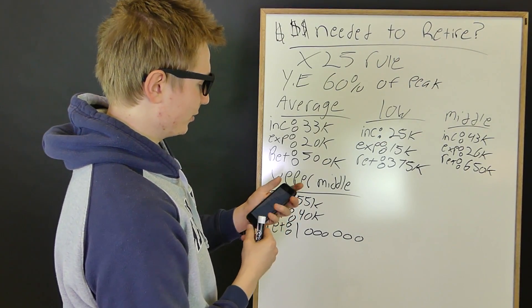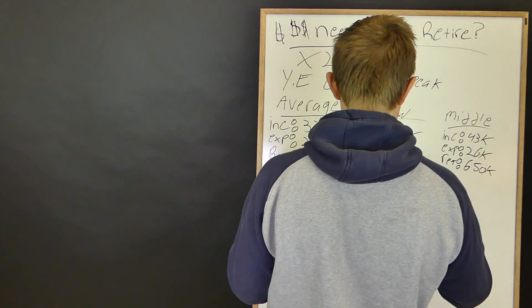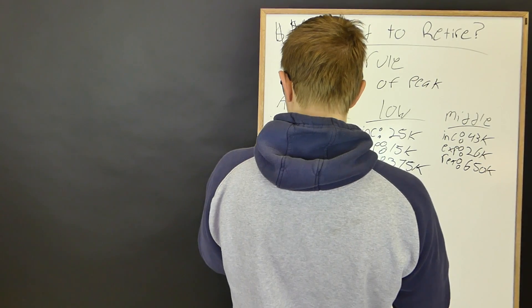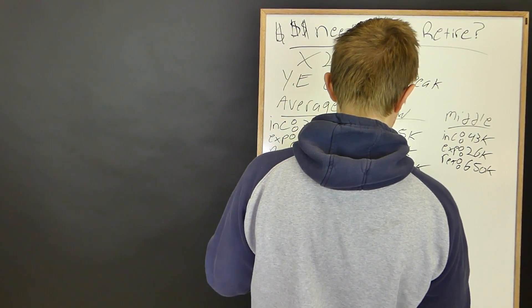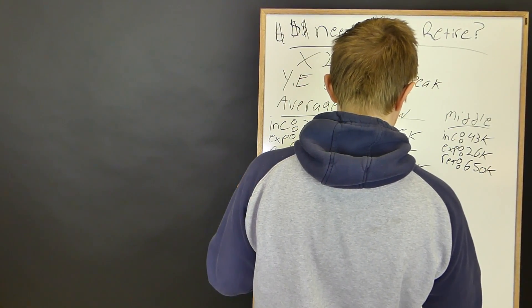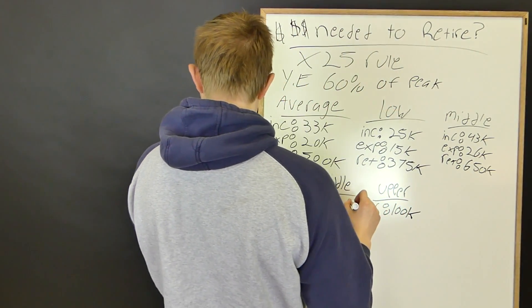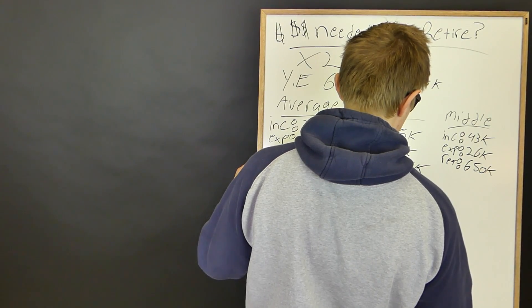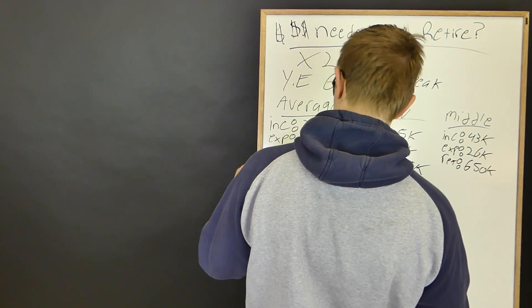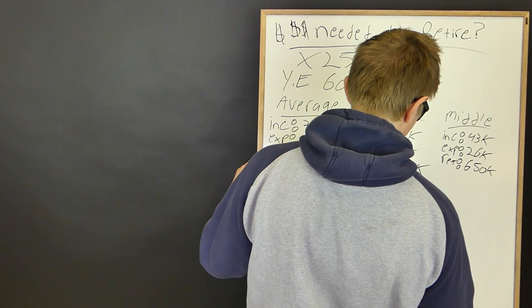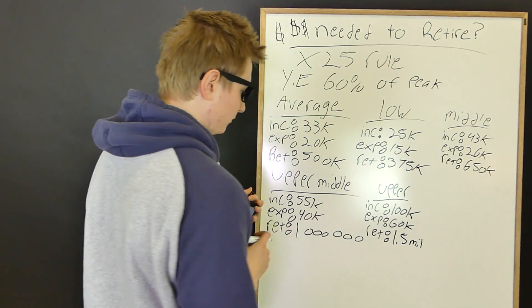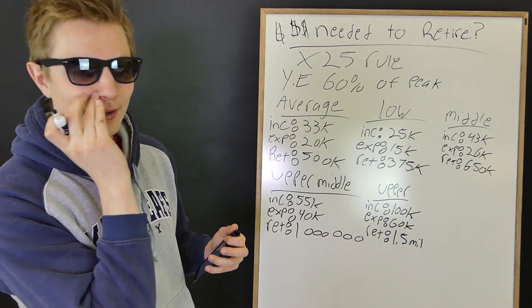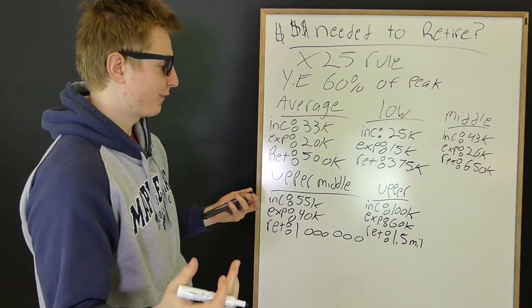Now we're going to move on to upper class. So this is, or upper income, whatever you want to say, upper class. So your income is $100,000. Your expenses would be about $60,000. And then you would need for retirement roughly $1.5 million. Again, that's about $750,000 in your investment portfolio over time if you invest at the age of 20, 25, 30 years old.